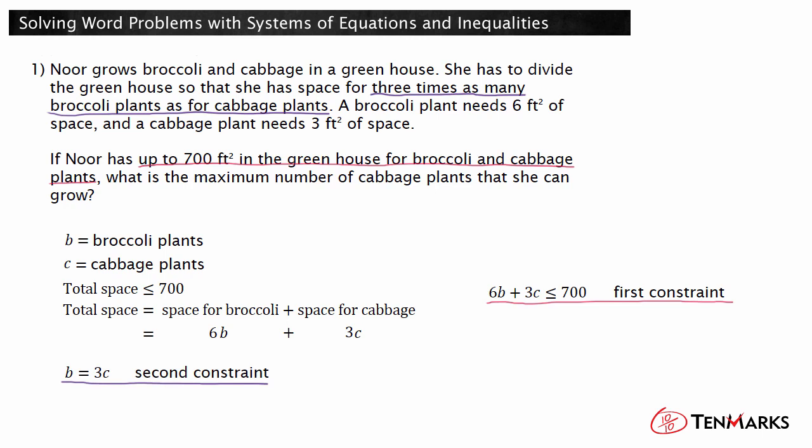Now the problem is represented by an equation and an inequality with two variables. Start by substituting for B in the inequality. After simplifying, you have 21 times C is less than or equal to 700. Dividing both sides by 21, you know that C is less than or equal to 33.33. This means that the maximum number of cabbages that Noor could grow is 33.